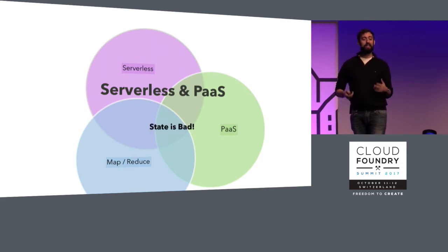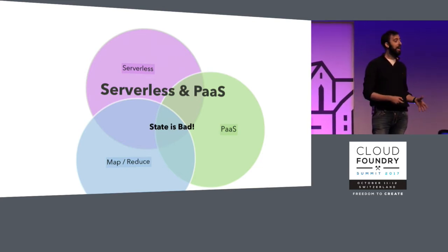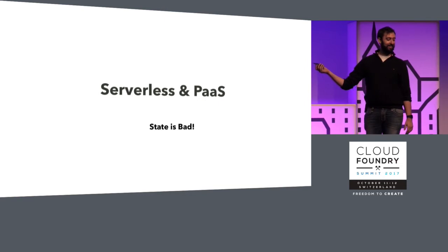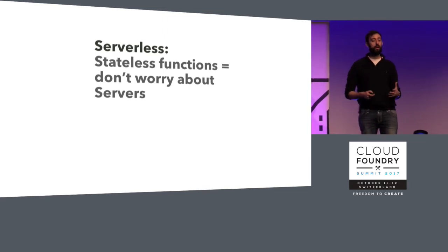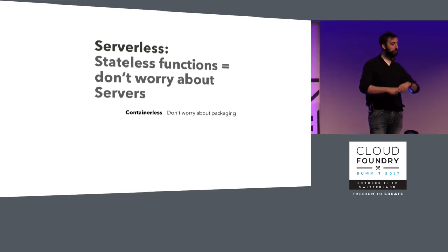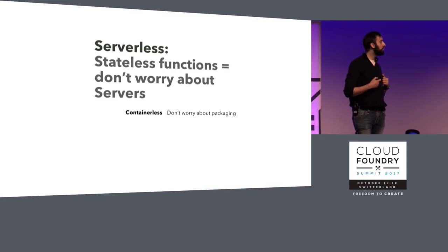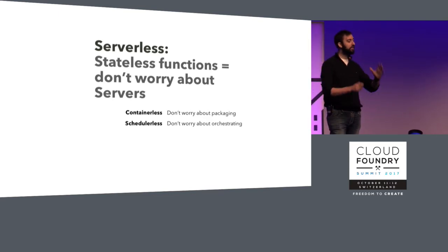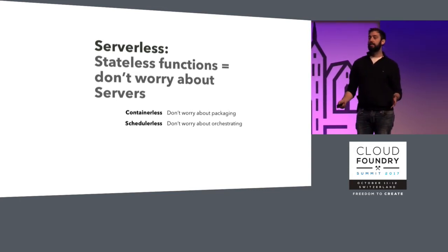What do these all have in common? State is bad — we need to get rid of state, and if you make state someone else's problem, it doesn't have to be the developer's problem. Serverless is stateless functions, which means you don't have to worry about servers. But it's actually a few other things: it's also containerless — you just push code, you don't have to worry about packaging it up. And it's schedulerless — I don't have to care about orchestrating that, because I pushed a stateless function. The platform will scale it up and down and run it wherever it needs to run.